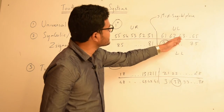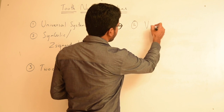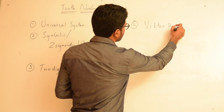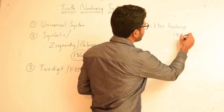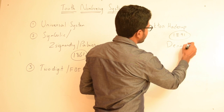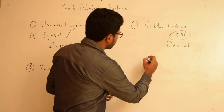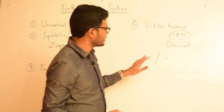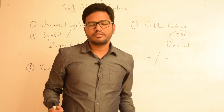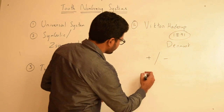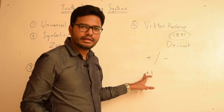Now let's see the fourth system, which was devised by Victor Haderup. This system was introduced in 1891 in Denmark and is in use even today. According to this numbering system, they use a plus or minus symbol to represent either a maxillary arch or mandibular arch, and also to distinguish a right-sided tooth from a left-sided tooth.